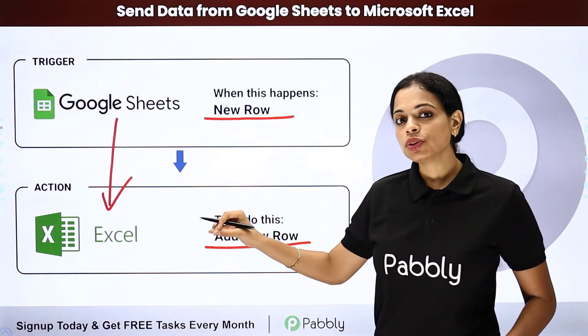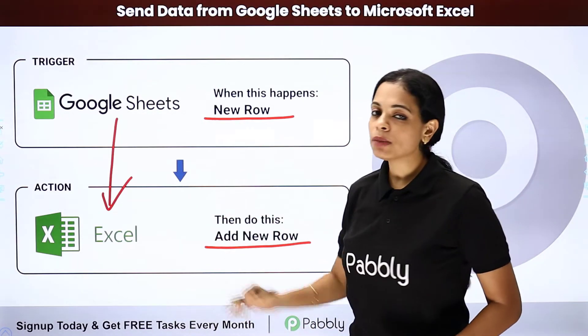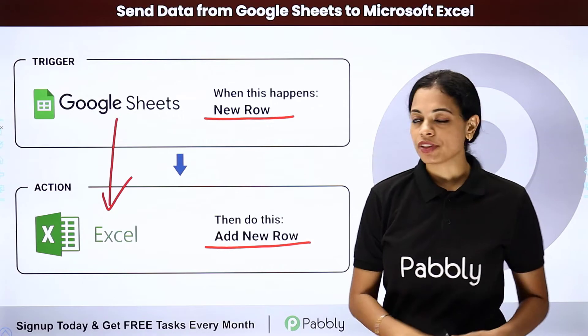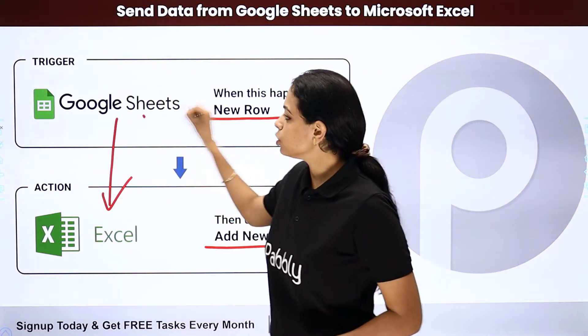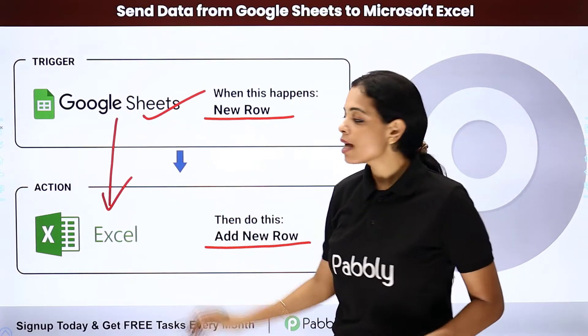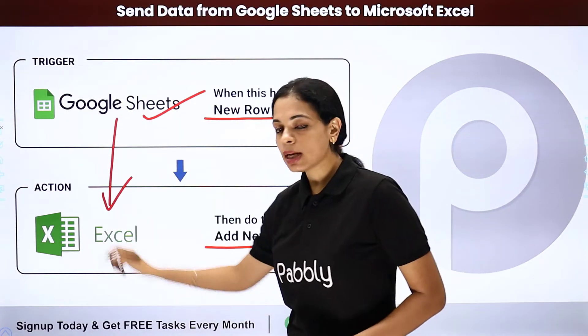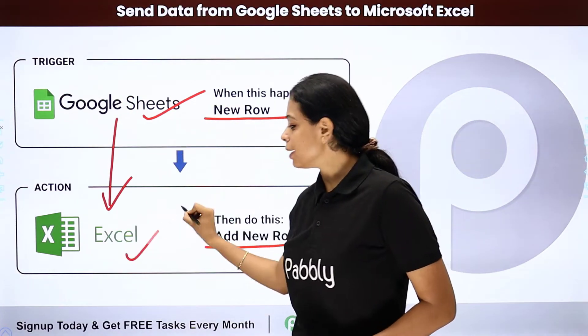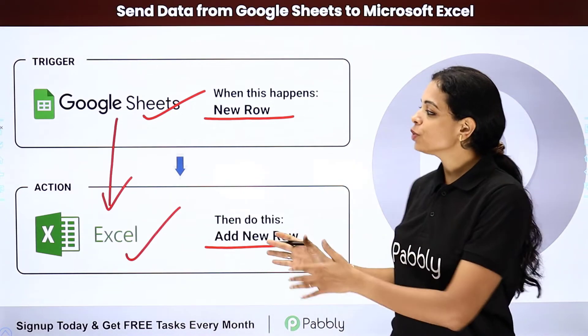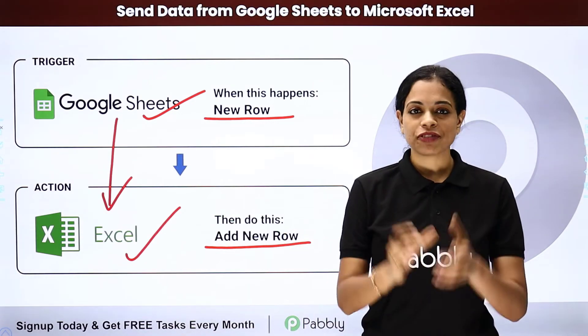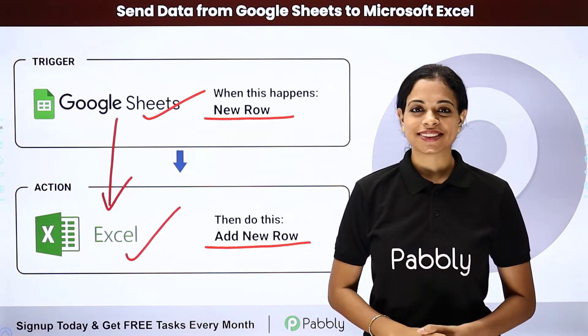This can be done by integrating these two applications and you can automate this process. By using Pably Connect software, your trigger application would be Google Sheets and your action application would be Microsoft Excel. Let me take you to my screen.